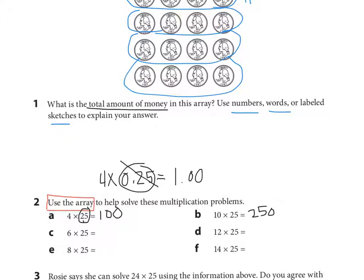C, six times 25 would be a dollar 50. Correct? If I count one, two, three, four, five, six. That's one dollar and fifty cents. So if six times 25 cents equals a dollar 50, then six times 25 equals 150. D asks 12 times 25. So I look up at the array and I think four plus four is eight plus four is 12. So 12 times 25 cents would equal three dollars. So 12 times 25 equals 300.